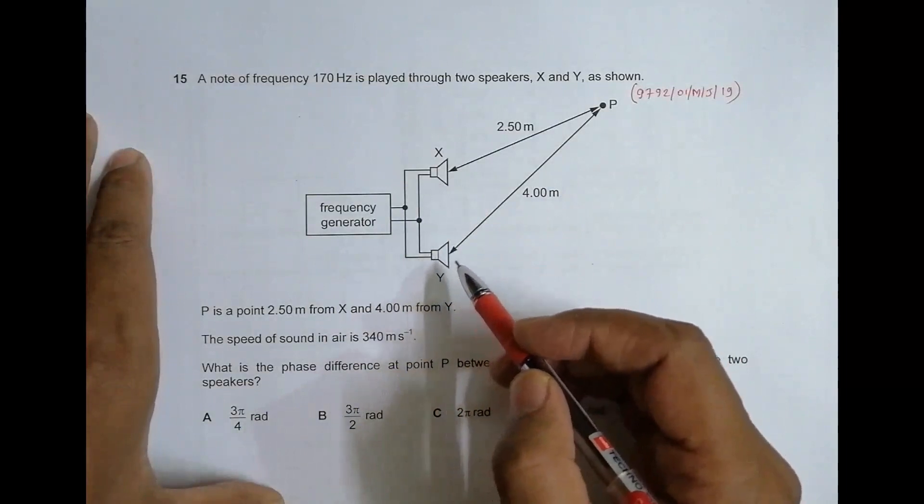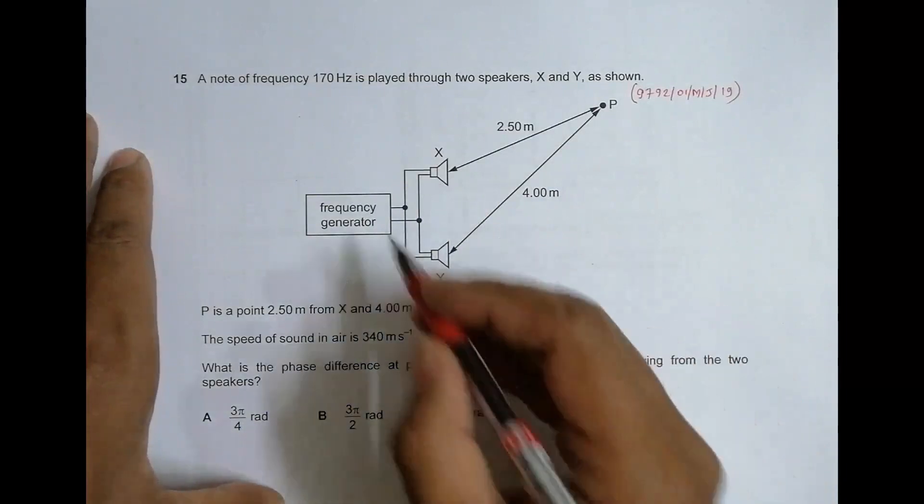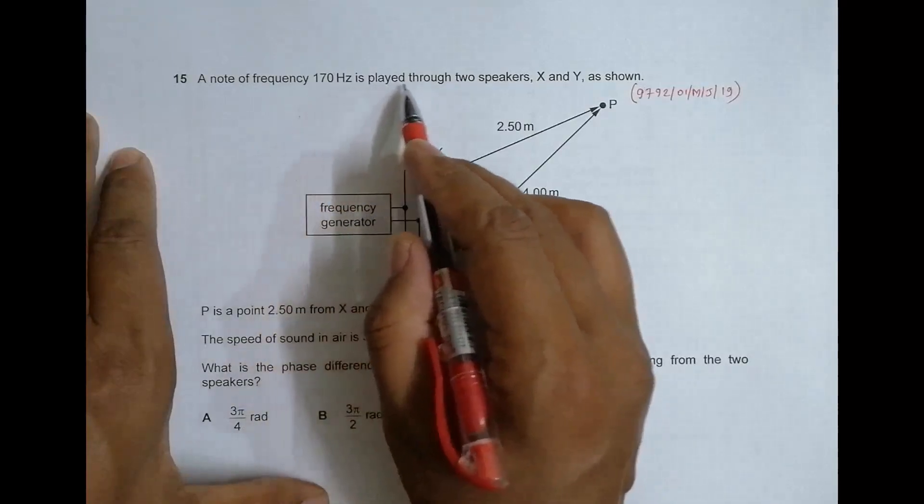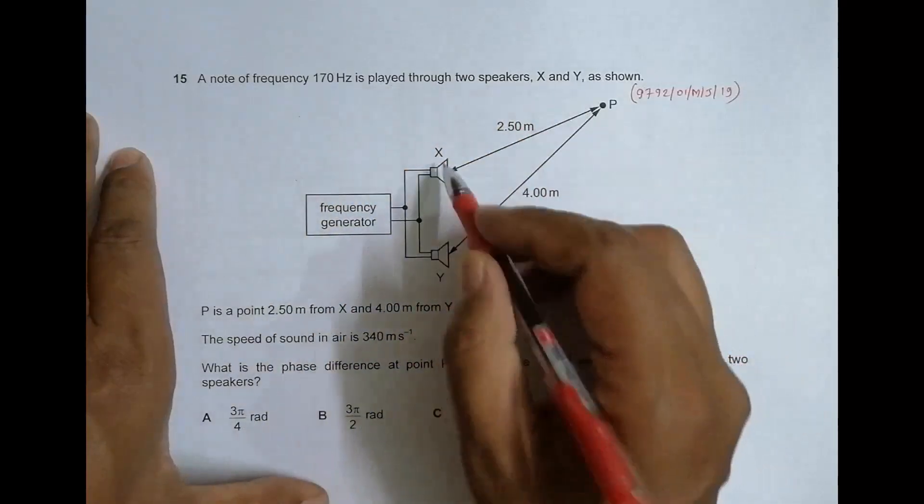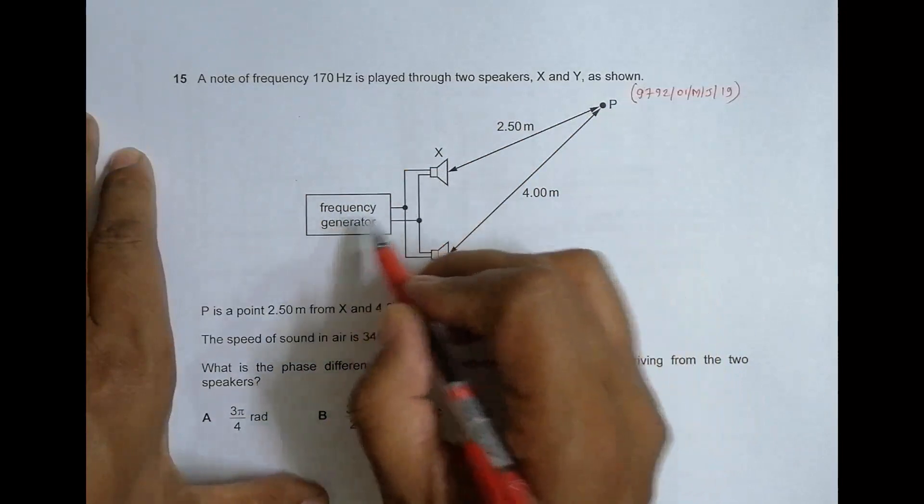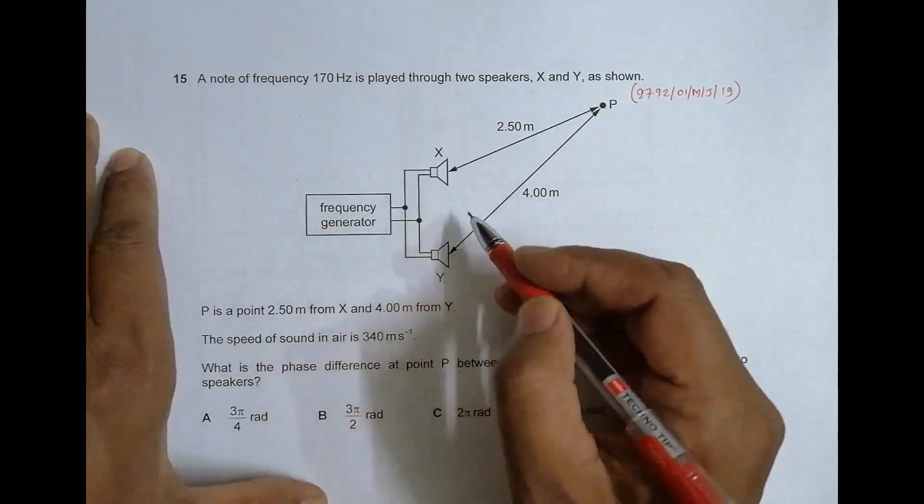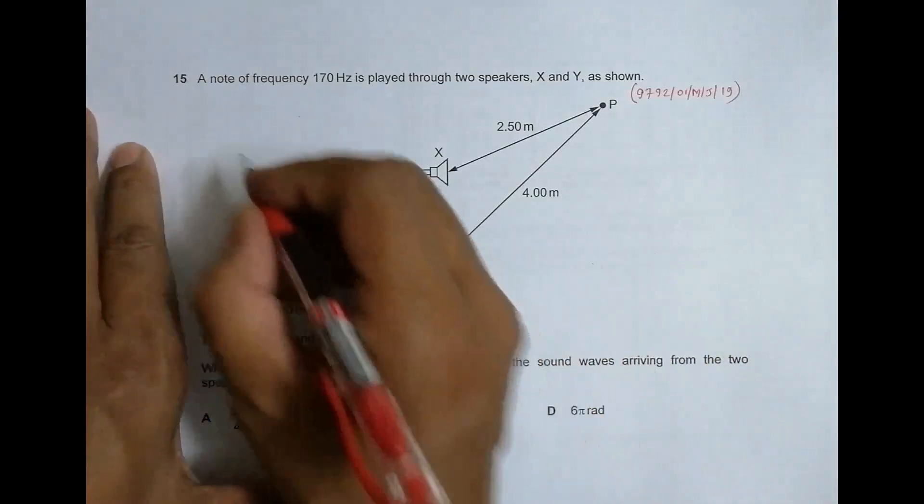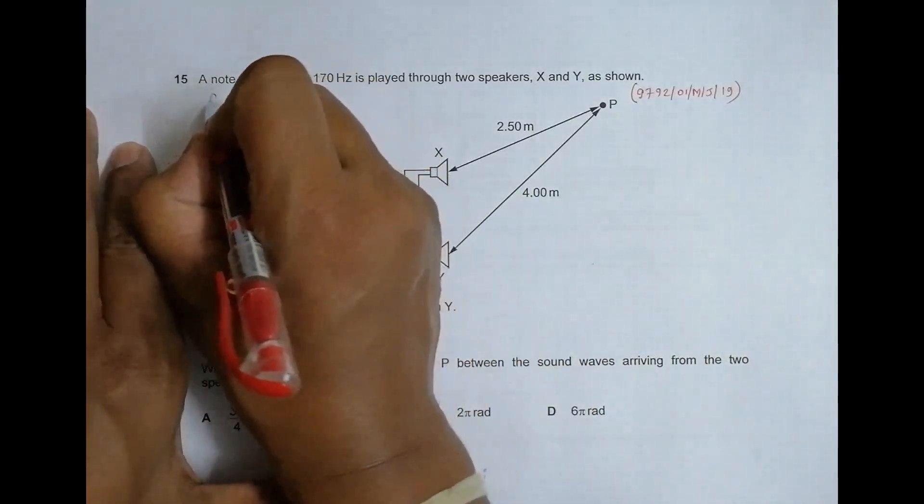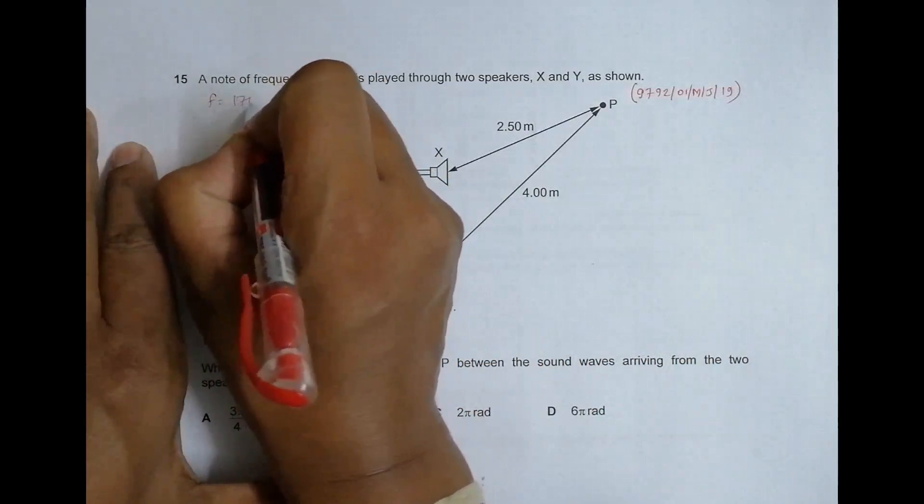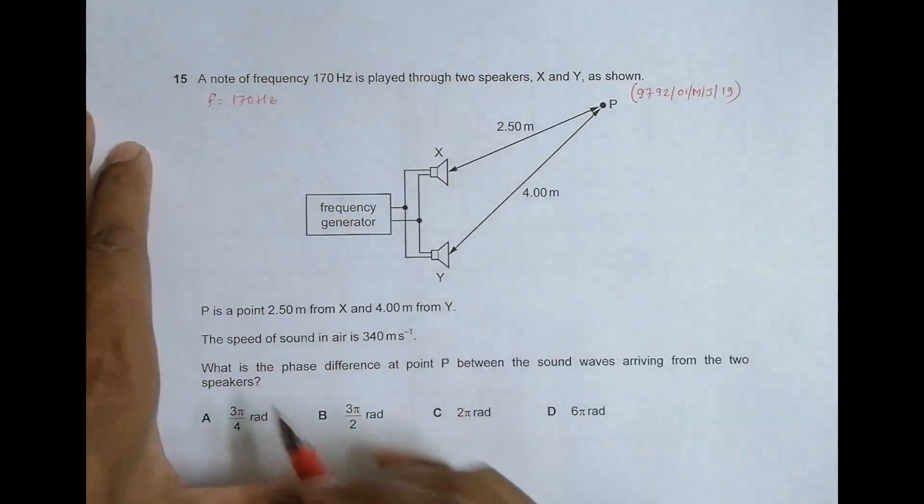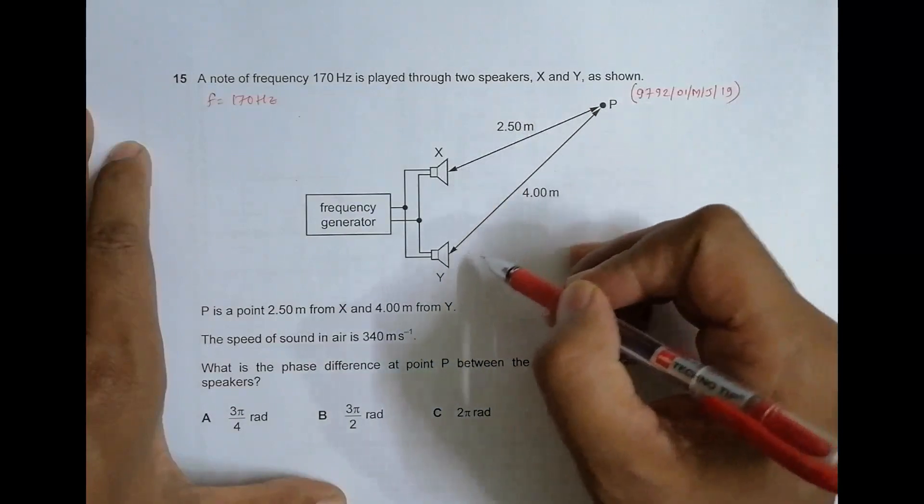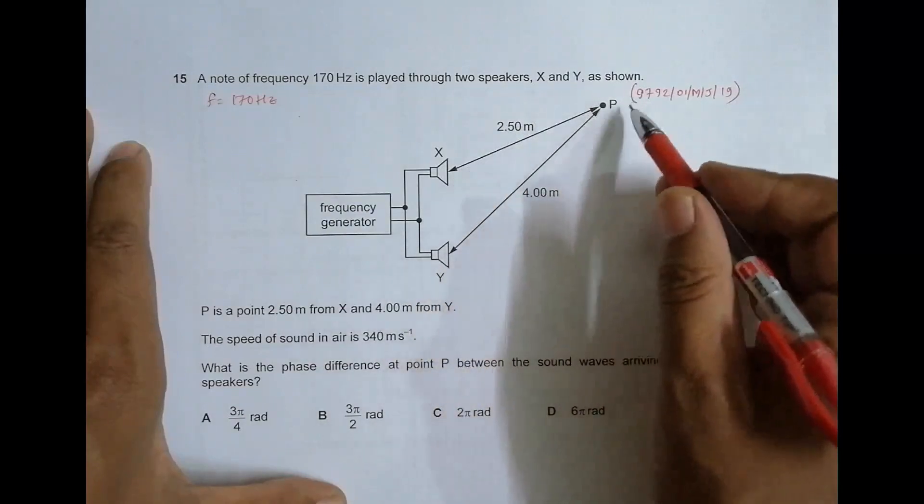As you can see from the arrangement, it is about interference. It shows that a note of frequency 170 Hertz is played through two speakers X and Y. This X and Y is operated by the same frequency generator, so it will be an example of coherent sources. Now the frequency is equal to 170 Hertz. Point P is 2.50 meters from X and 4.00 meters from Y.